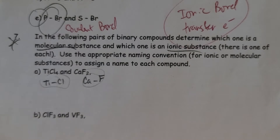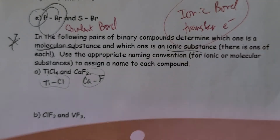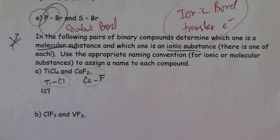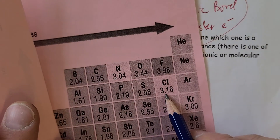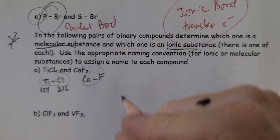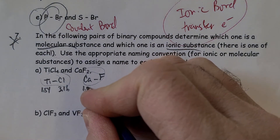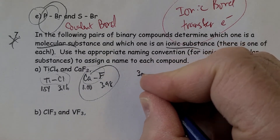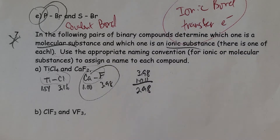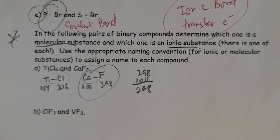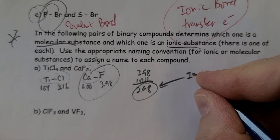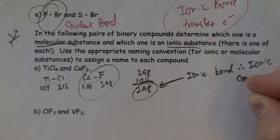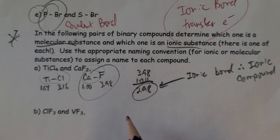Looking up the values: titanium is 1.54, chlorine is 3.16, calcium is 1.00, and fluorine is 3.98 — the largest electronegativity. For calcium fluoride: 3.98 − 1.00 = 2.98, which is way bigger than 1.7, so that's an ionic bond — therefore an ionic compound.